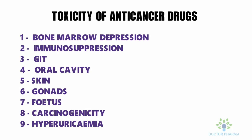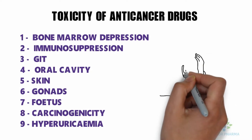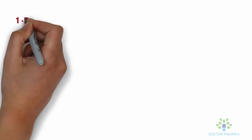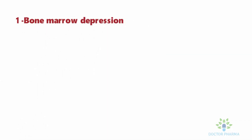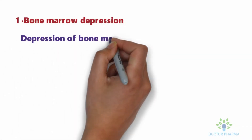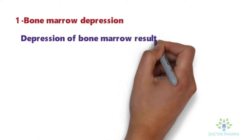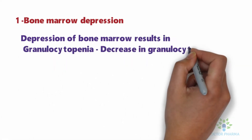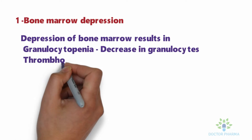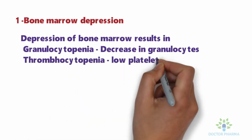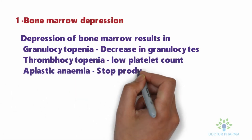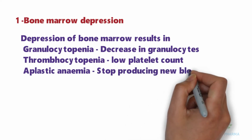The first point is bone marrow depression, which is one of the common side effects caused by the use of cytotoxic drugs. Bone marrow depression results in granulocytopenia — a decrease in granulocytes — thrombocytopenia — a low platelet count — and aplastic anemia, a condition in which production of blood cells is stopped.